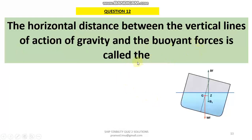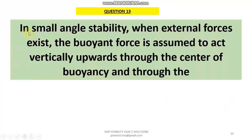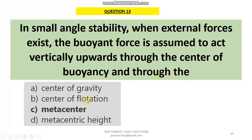Question 12: The horizontal distance between the vertical lines of action of the gravity and buoyancy forces is what we call the righting arm. This distance GZ is an indicator of stability of a ship in all conditions and is fundamental to stability calculations. Question 13: In small angle stability when external forces exist, the buoyancy force is assumed to act vertically upwards through the centre of buoyancy and through the metacentre. External forces prevail when the buoyancy force is acting through the centre of buoyancy and metacentre.